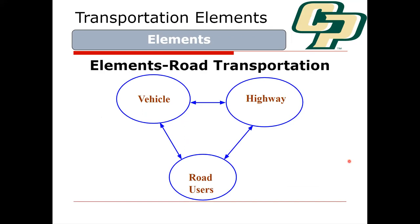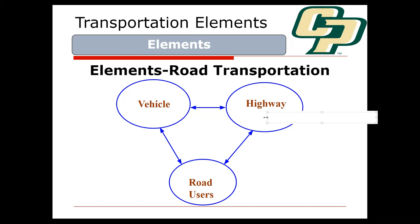Three categories of elements in surface transportation: vehicles, highways, and road users. Highways or roadways are any place where people move — it could be highways, streets, walkways, or sidewalks. All of those things are part of our roadway network. Road users are the ones operating the vehicle; the vehicle is on the highway or street; and the highway feeds into how users behave as well.